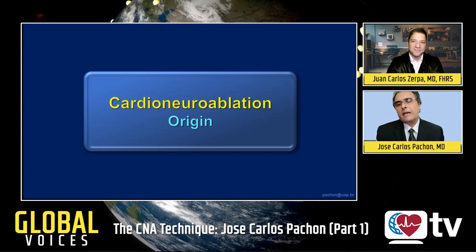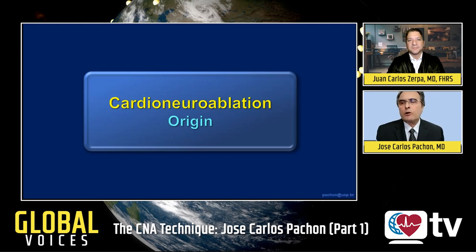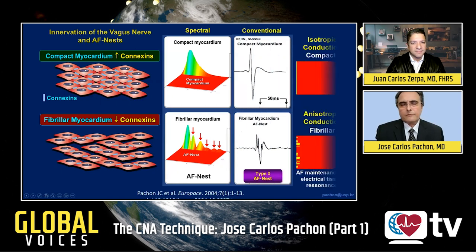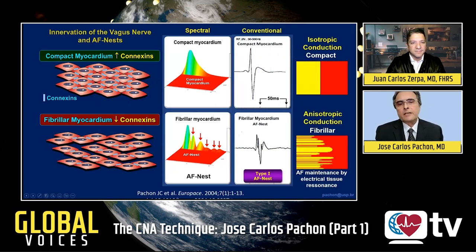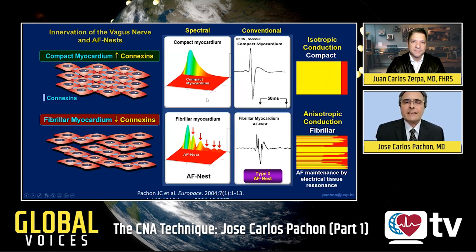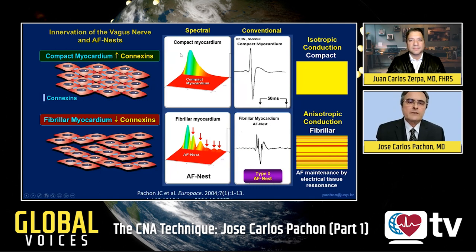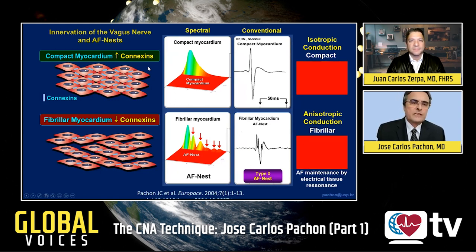Cardioneuroablation was created when we were trying to understand atrial fibrillation in the normal heart, in normal people. We developed a spectrometer to study the atrial potentials using spectral analysis online during ablations. Basically, through spectral analysis, we found that the atrial myocardium in the normal heart is composed of two different strands.